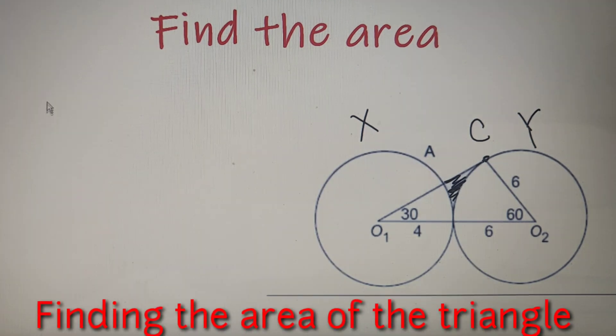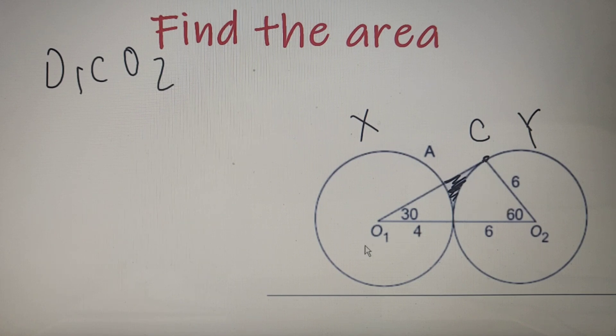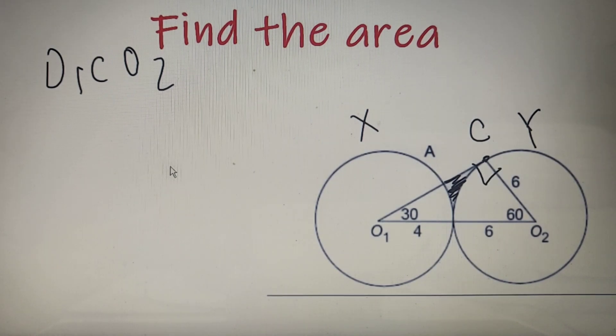Let's find the area of triangle O1CO2. Now over here we can see that O1C is a tangent to circle Y, so I can say that this angle is equal to 90 degrees. If this angle is equal to 90 degrees, then I can say that this triangle is a right angle triangle.